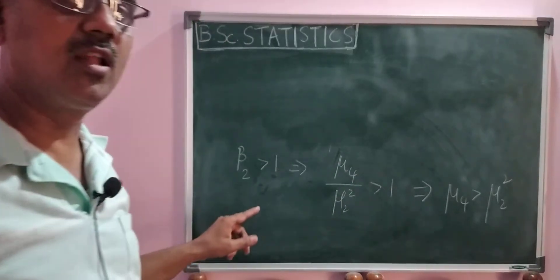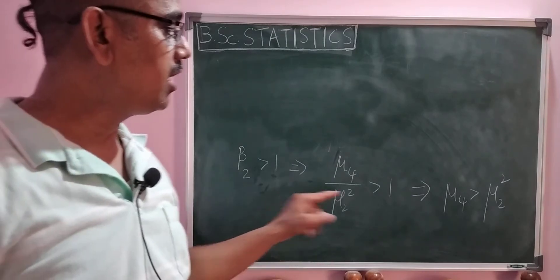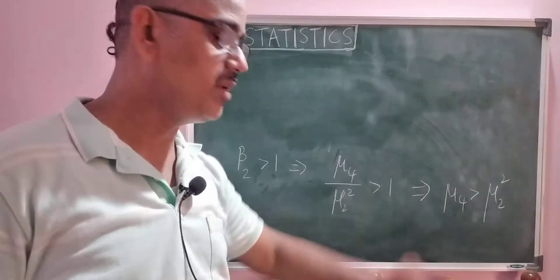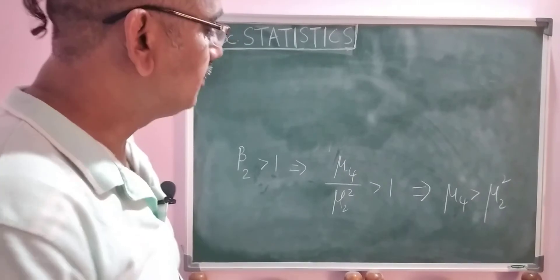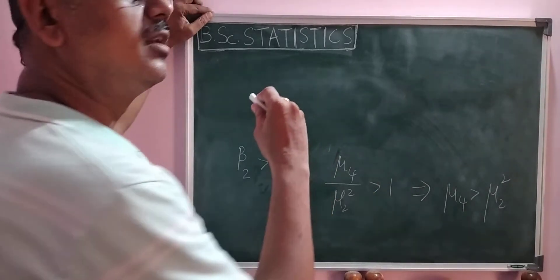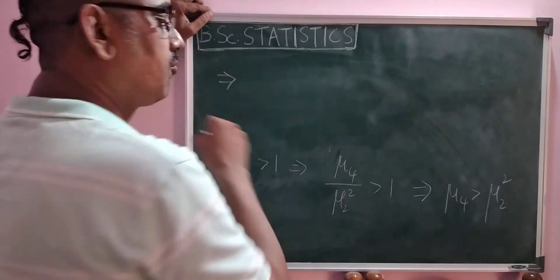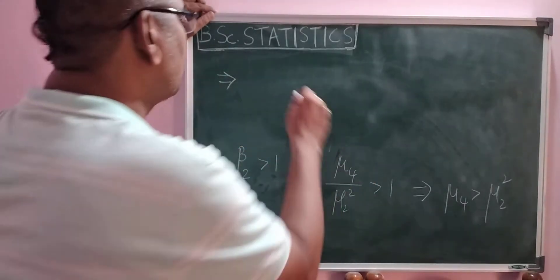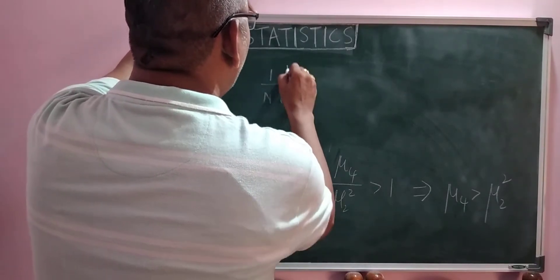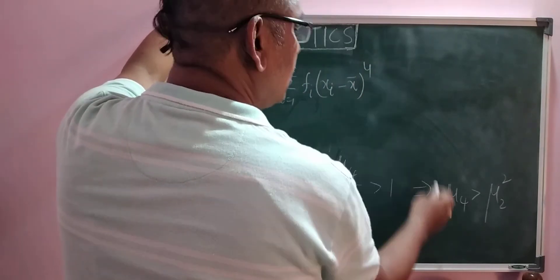I have considered beta 2 is greater than 1, and to prove it I need to show mu 4 is greater than mu 2 square. For a discrete distribution with values x_1, x_2, ..., x_n with frequencies f_i, the formula of mu 4 is: 1 by N, summation i equals 1 to n, of f_i into (x_i minus x-bar) whole power 4.